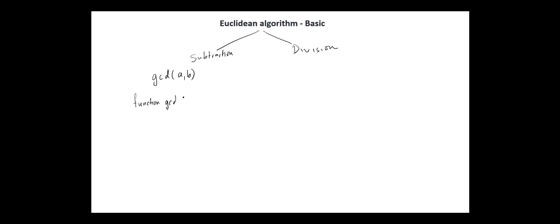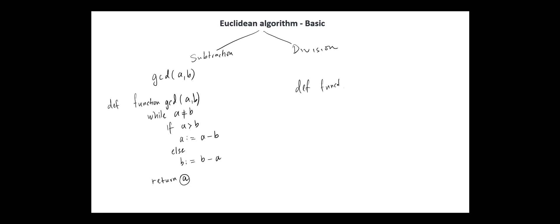Function GCD(a, b): while a is not equal to b, if a is greater than b, we subtract b from a and store the result in a; else we subtract a from b and store the result in b. Finally, a is returned. In the division version, instead of subtracting, we divide until a remainder of 0 is found. The function can be written as: if a equals 0, return b (this is the base condition); else return GCD(b modulus a, a).